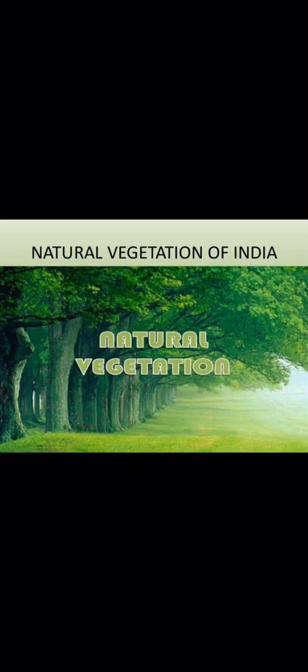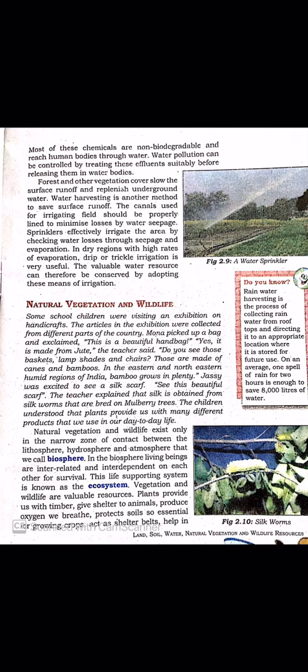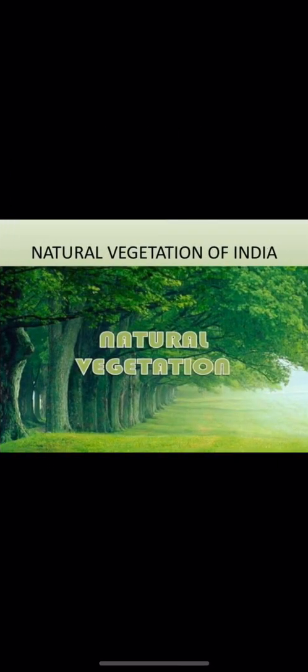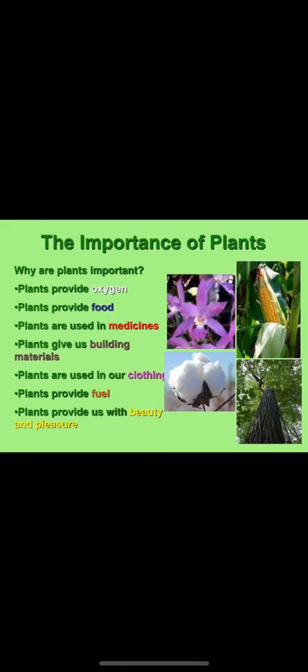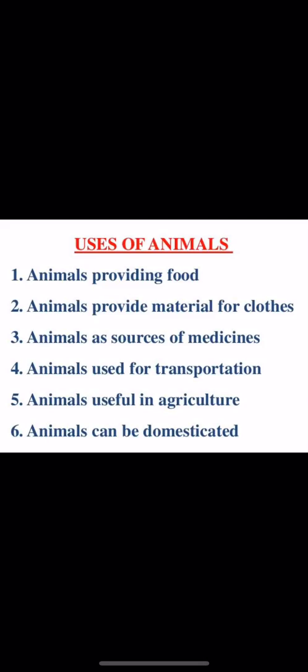The next natural resource is natural vegetation and wildlife. We know the importance of plants — they provide oxygen, food, medicine, clothing, material, and fuel. We also know the uses of animals for food, clothes, medicine, transportation, agriculture and many such things. Natural vegetation and wildlife is very important for us because we have innumerable uses of these plants and animals.